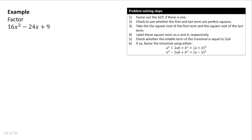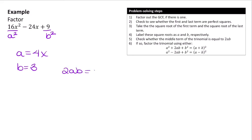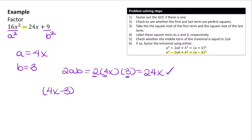Now let's try this example. The first term is a perfect square and the last term is a perfect square. a equals the square root of 16x² — taking the square root of 16 gives 4, and half the exponent gives us 4x. b equals the square root of 9, which is 3. Then 2ab = 2 times 4x times 3 = 24x, which matches our middle term. We have a subtraction sign, so this factors as (4x − 3)².